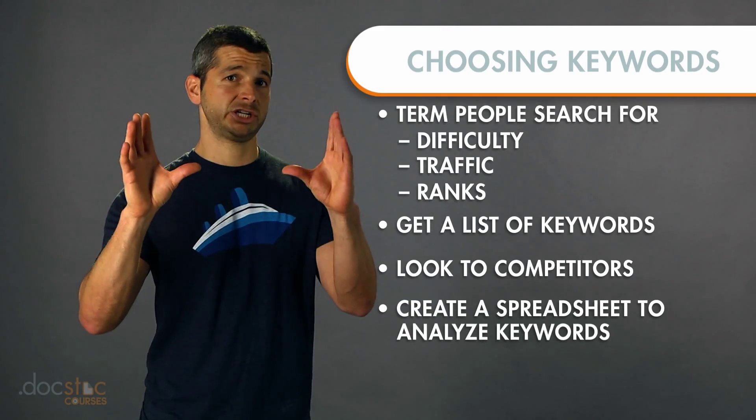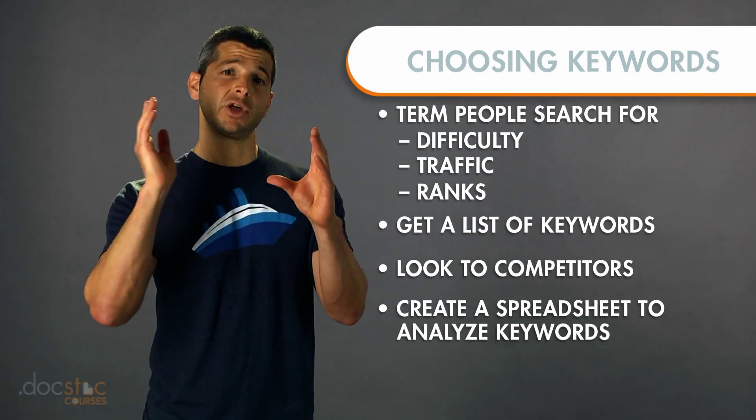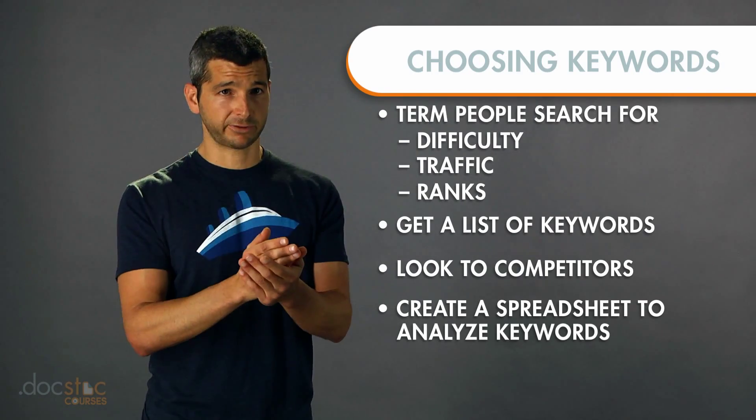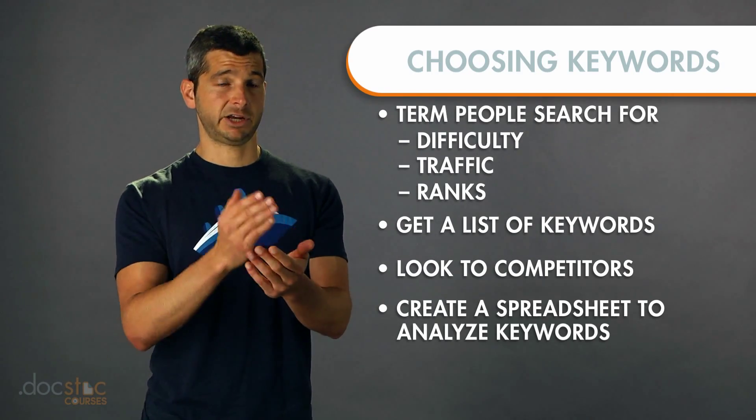Ideally, create a spreadsheet and in each column note the different terms: your difficulty, your competitiveness, and your ranking. Go into your tool and research the score for each one. Then look for keywords that have the highest level of traffic for the least amount of competition — those are the keywords you're going to use. Take those, upload them into your app profile, launch your app, and see how they perform.